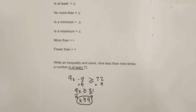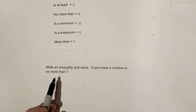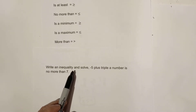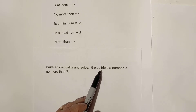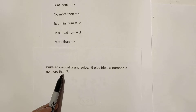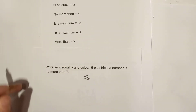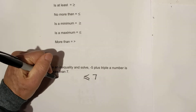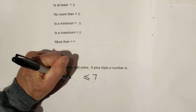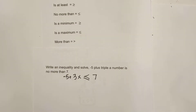Let's work a couple more. This one says: write an inequality and solve. Minus five plus triple a number is no more than seven. 'No more than' is less than or equal to. So it's going to be: negative five plus three times a number is less than or equal to seven.